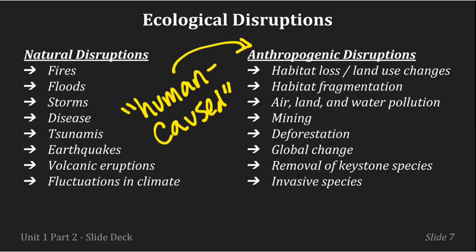Anthropogenic disruptions are really the focus of the bulk of this class in APES. These include habitat loss and land use changes, habitat fragmentation — like when we build a canal down one habitat and fragment it into two — air, land, and water pollution, mining, deforestation, and global change, which includes not just global warming but also rising sea levels and decreased sea ice. In this unit, we'll specifically talk about the removal of keystone species and the introduction of invasive species.